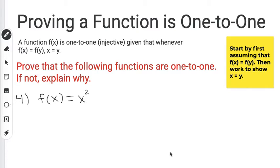We want to prove that the following functions are one-to-one, and if they're not one-to-one, then explain why they're not. Whenever we do our proof, we want to first start off assuming that f(x) equals f(y).